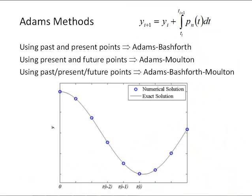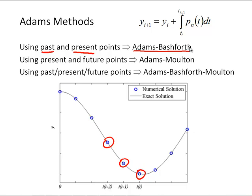Here are some approaches to developing Adams methods, depending on which points we use. Using only past and present points — such as t_i, t_i-1, t_i-2 — is called an Adams-Bashforth method. Using present and future points — like t_i and t_i+1 — is an Adams-Moulton method. Combining both approaches gives an Adams-Bashforth-Moulton method. Let's look at some Adams-Bashforth examples to understand how the number of points relates to the order of the method.